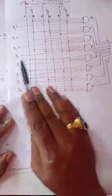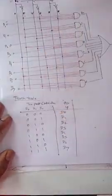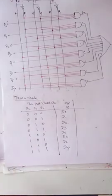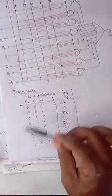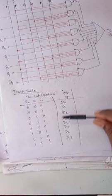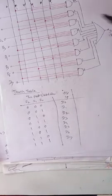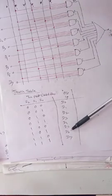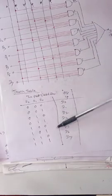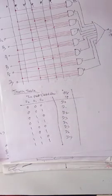This is the working of the eight-line to one-line multiplexer, known as the 8-to-1 multiplexer. This is the truth table, and from this you can write it in the exam. If asked to draw the 8-to-1 multiplexer and its truth table, it may be asked for three or four marks depending on the paper setter.